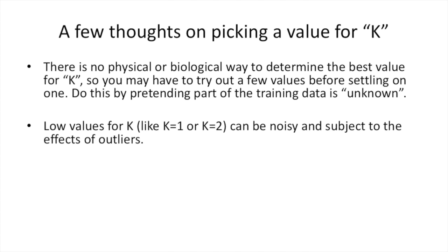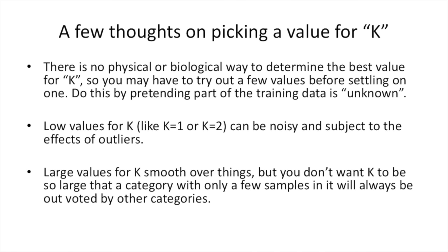Low values for K, like K equals 1 or K equals 2, can be noisy and subject to the effects of outliers. Large values for K smooth over things, but you don't want K to be so large that a category with only a few samples in it will always be outvoted by other categories.